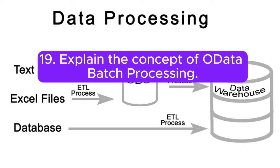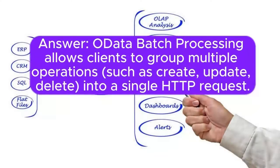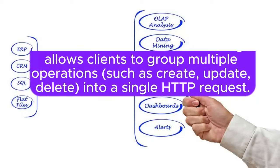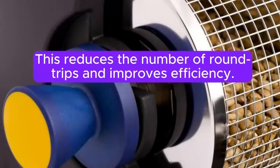Question 19: Explain the concept of OData batch processing. OData batch processing allows clients to group multiple operations — such as create, update, and delete — into a single HTTP request. This reduces the number of round trips and improves efficiency.